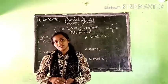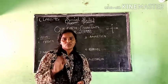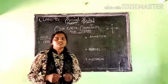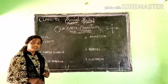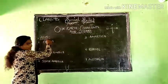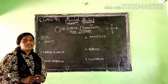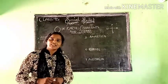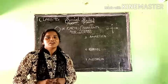Now how many continents do we have? We have seven continents. Among the seven continents, we have started the first two. The first continent is Asia.